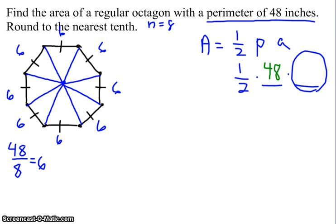Now let's go ahead and find that central angle. Since an octagon has eight sides, there's going to be eight central angles. And 360 divided by eight gives me 45.